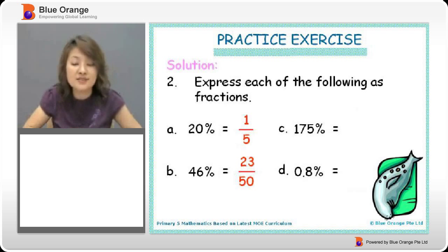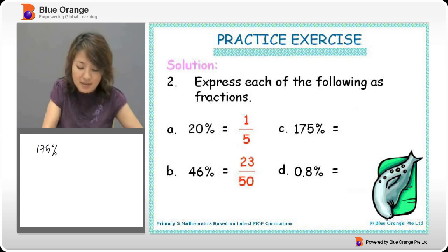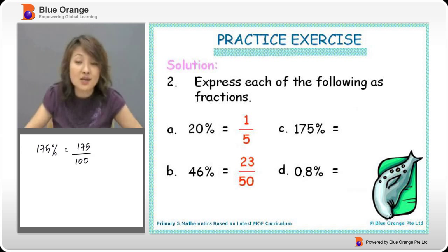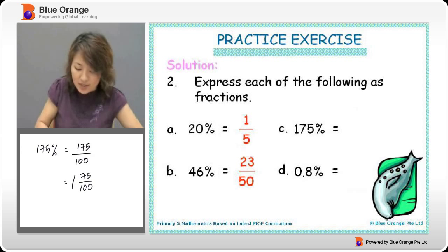Next, we have 175%. So 175%. If we change it, it will be 175 over 100. So in this case, we know that this is an improper fraction. That makes 1 whole 75 over 100.